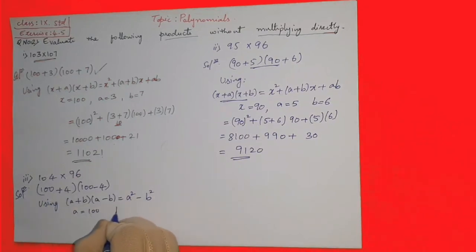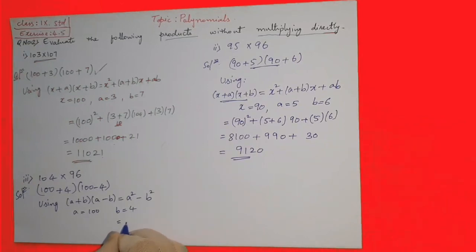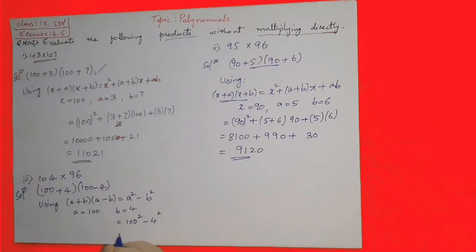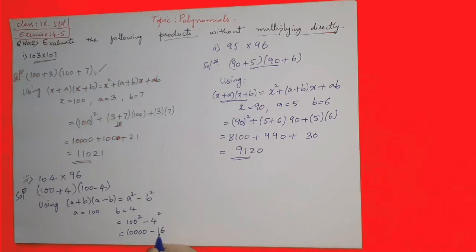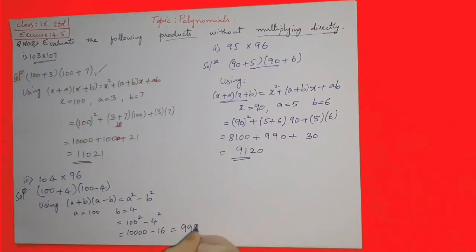Substitute now: 100 square minus 4 square. 100 square means 10,000 minus 16. So 10,000 minus 16, if we subtract, it is 9,984.